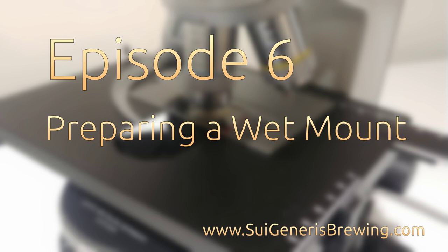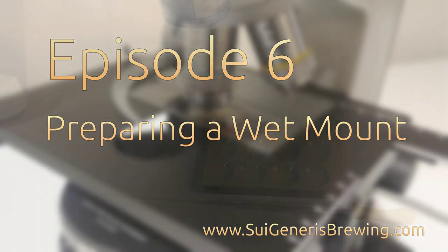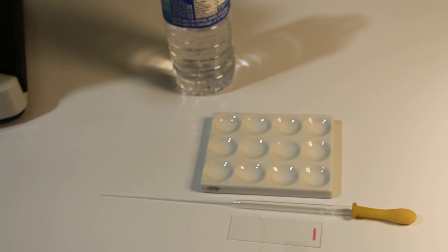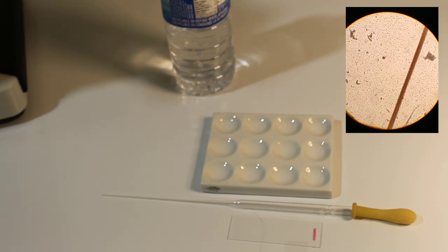Welcome to Episode 6 of Microbrews, my new video series on how to make the best use of a microscope in your home or craft brewery. In this episode I'll be demonstrating the most basic method of looking at yeast under a microscope, the classic wet mount.